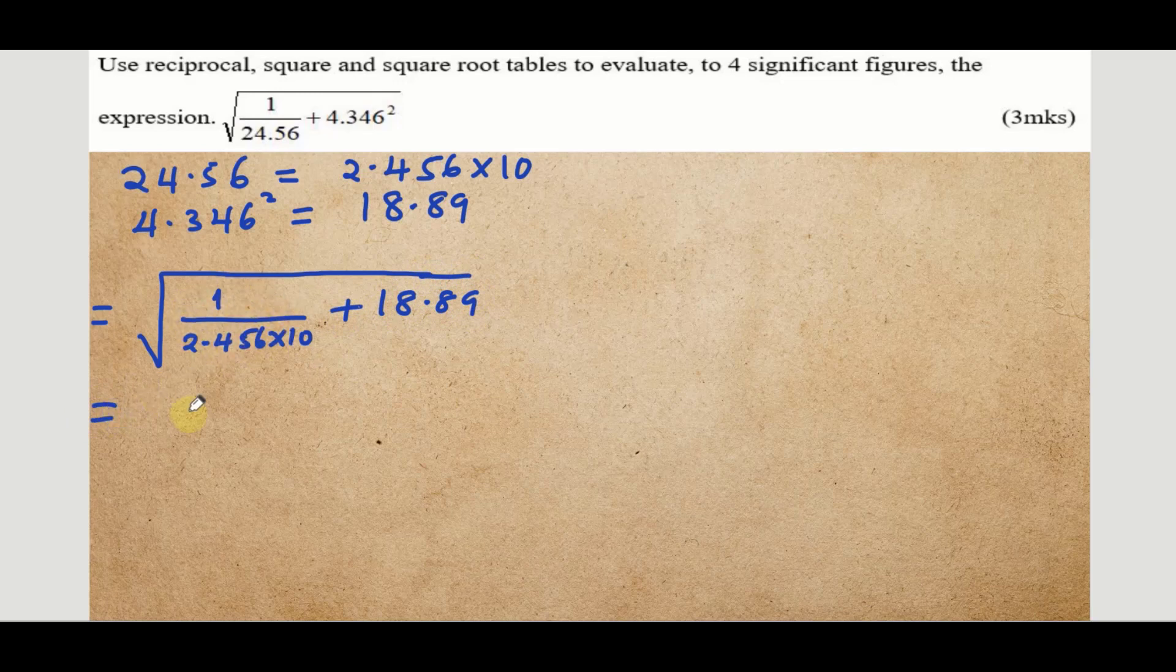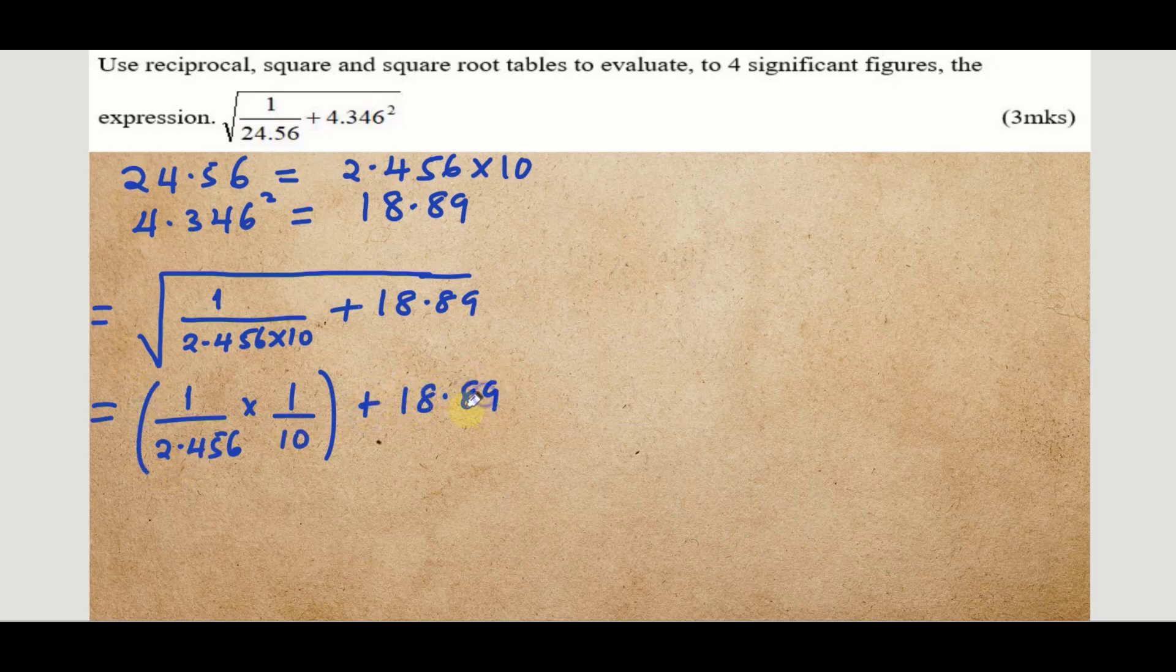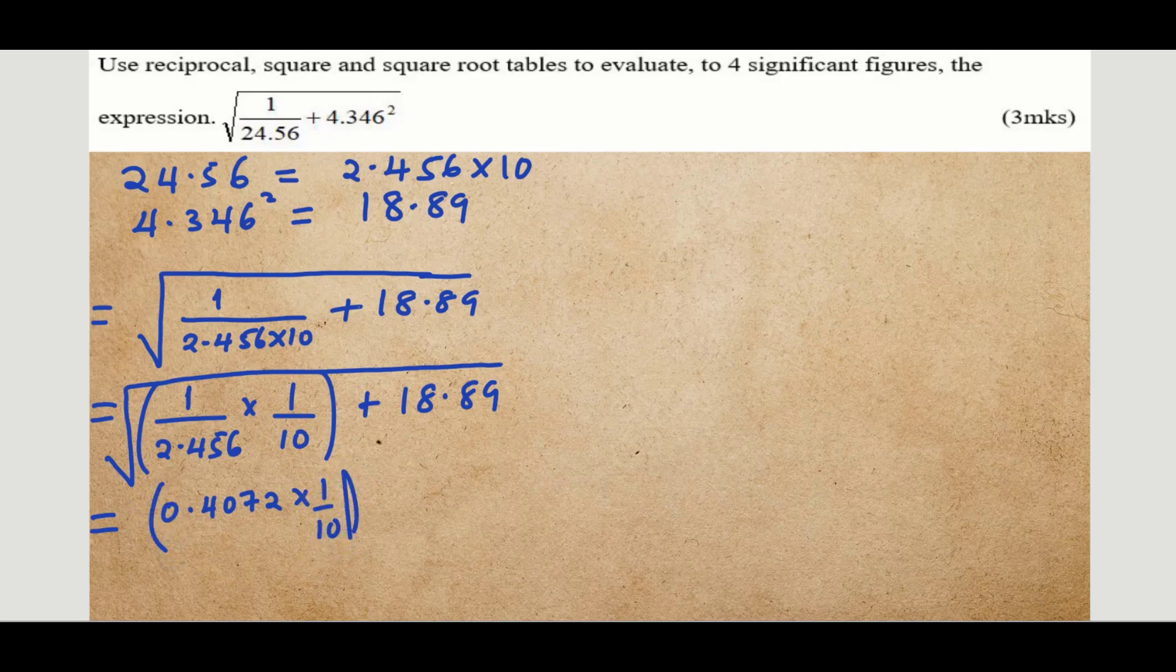We can go ahead and split these: get 1 divided by 2.456 times 1 over 10, addition 18.89. Use the tables of reciprocal to get these. So we're going from our tables to get the reciprocal of 2.456, that is reading it directly to give us 0.4072 times, you'll then get the reciprocal of this just multiplied by 10, then add 18.89.